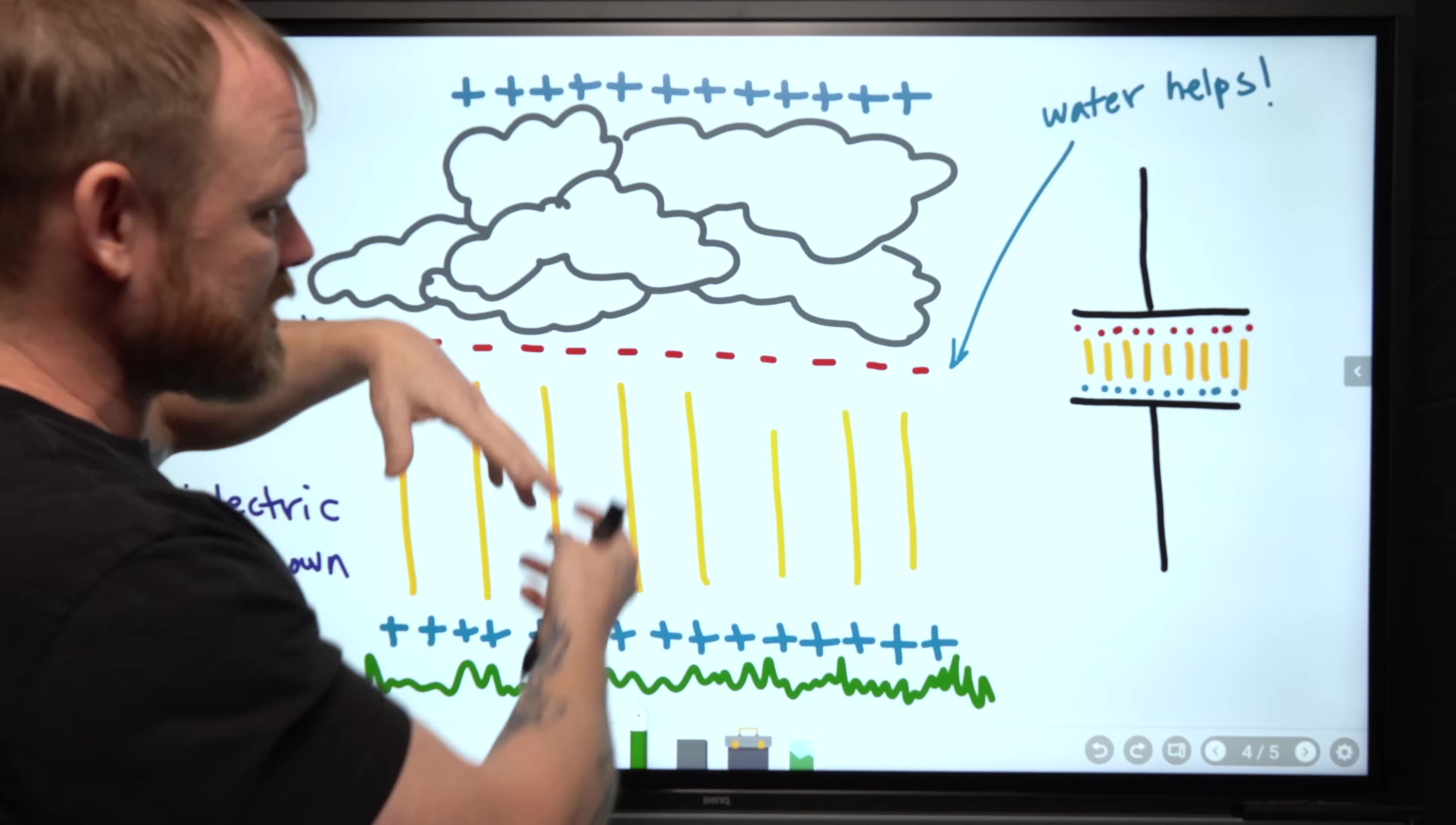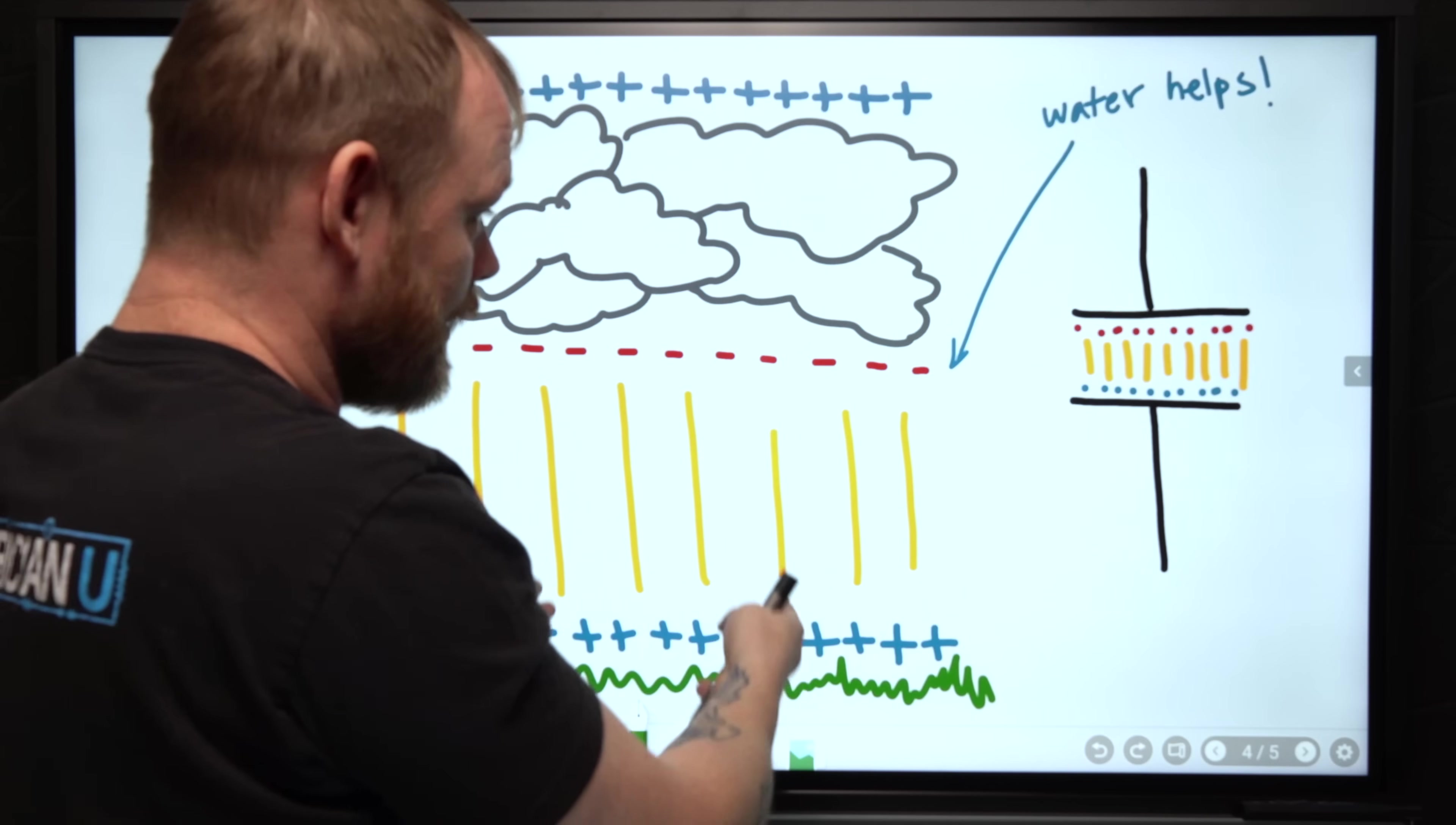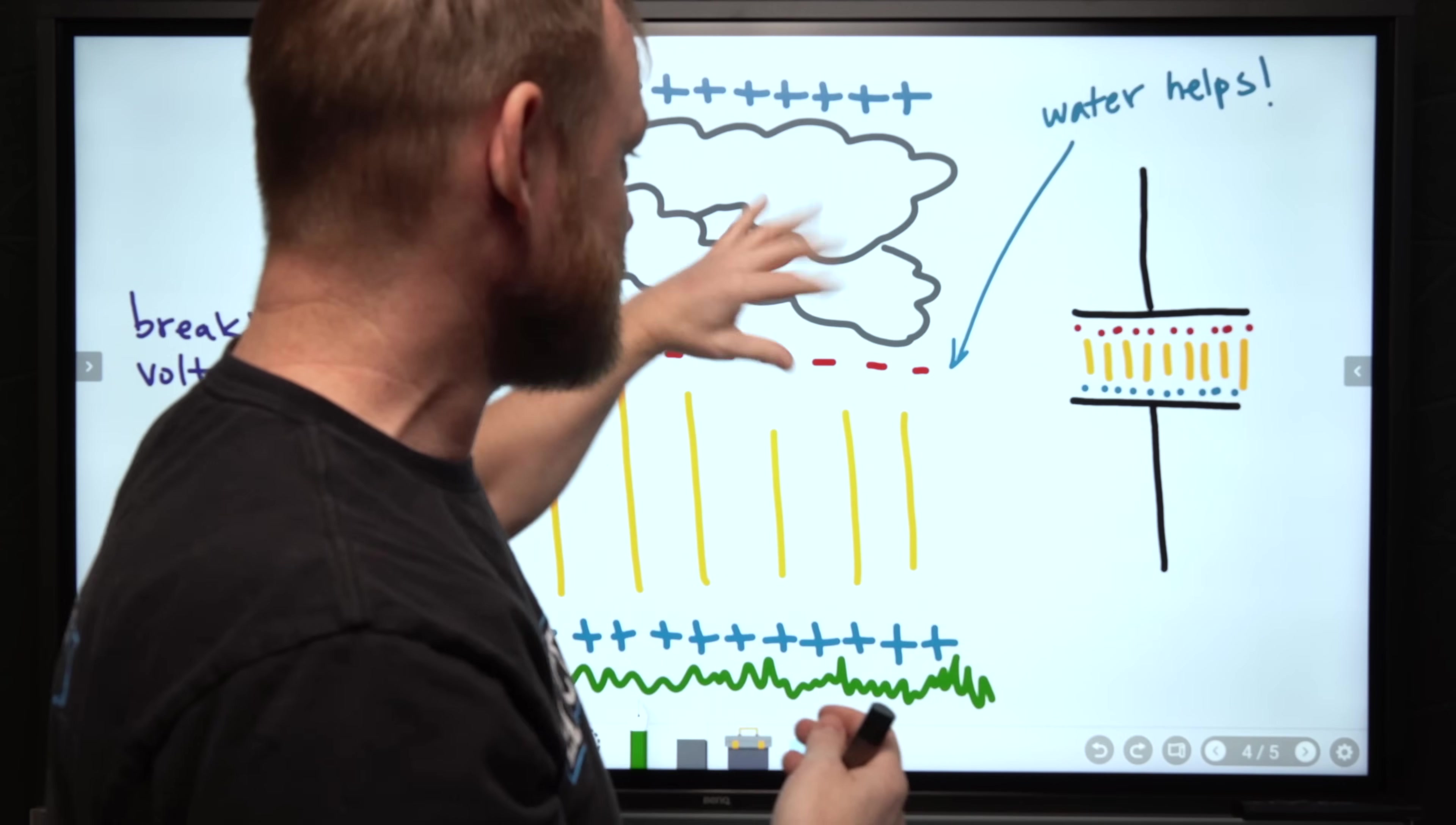The bottom of a cloud starts to accumulate an excess of negative charge that looks largely more negative than the earth, so we can think of the earth as actually kind of changing to this positive charge relative to the cloud.